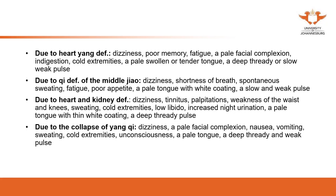For hypotension, we mainly focus on deficiency — there is no excess in this situation. The key patterns are heart Yang deficiency, Qi deficiency of the middle Jiao (which is spleen Qi deficiency), and heart and kidney deficiency — especially heart and kidney Yang deficiency due to the collapse of Yang Qi. We mainly focus on the Yang Qi of the heart, spleen, and kidney.